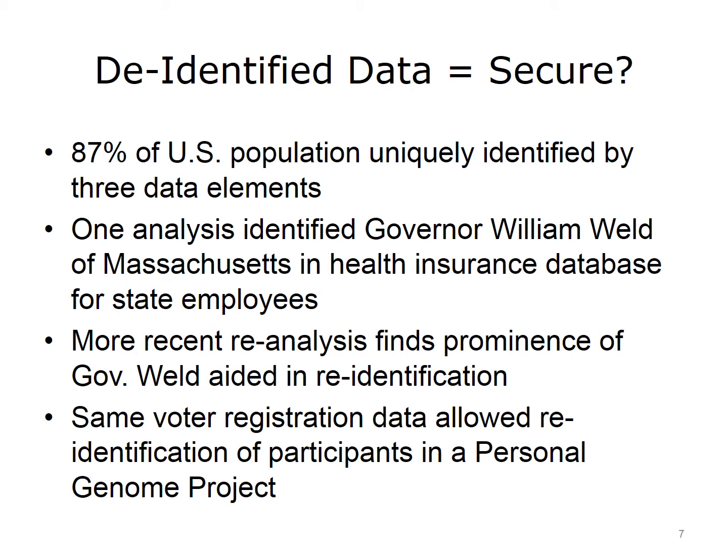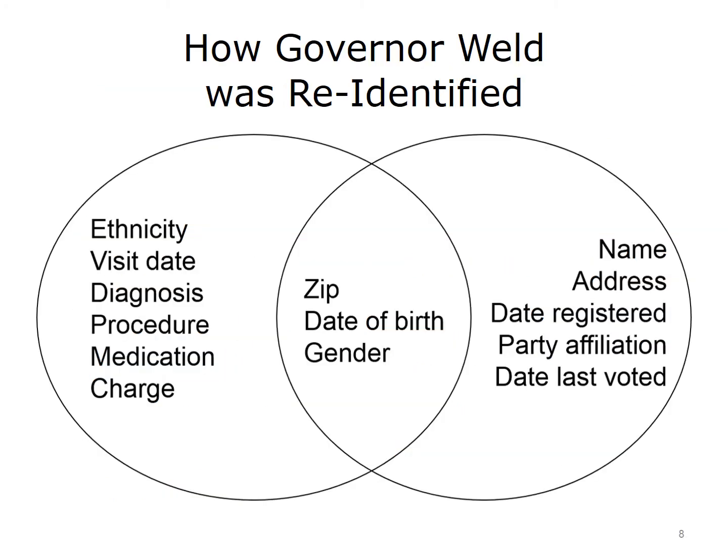However, in 2013, using voter registration data of participants in the Massachusetts-based Personal Genome Project, Sweeney was also able to show that people who have agreed to have their genomic data published are relatively easily identified individually using that voter registration data. The figure on this slide shows how the medical information about Governor Weld was re-identified. To the left is the de-identified medical database with various medical data including diagnoses, procedures, medications, etc., as well as the de-identified person's zip code, date of birth, and gender. This latter information is also in the voter registration database on the right, which also has the individual's name and address, demonstrating how the governor's medical data was discovered.